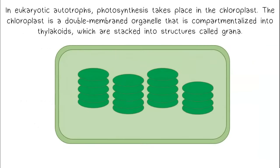In eukaryotic autotrophs, photosynthesis takes place in the chloroplast. The chloroplast is a double-membraned organelle that is compartmentalized into thylakoids, which are stacked into structures called grana.